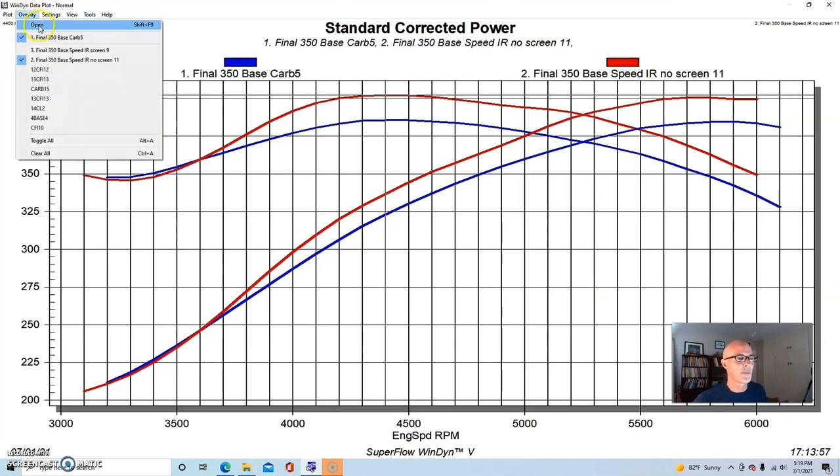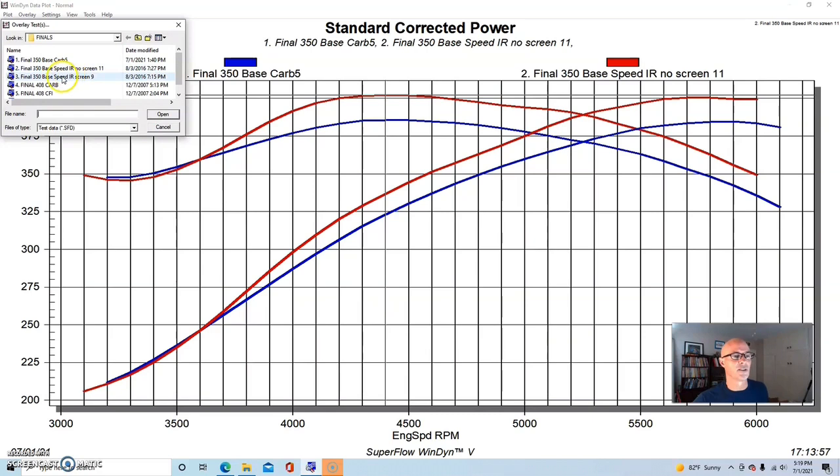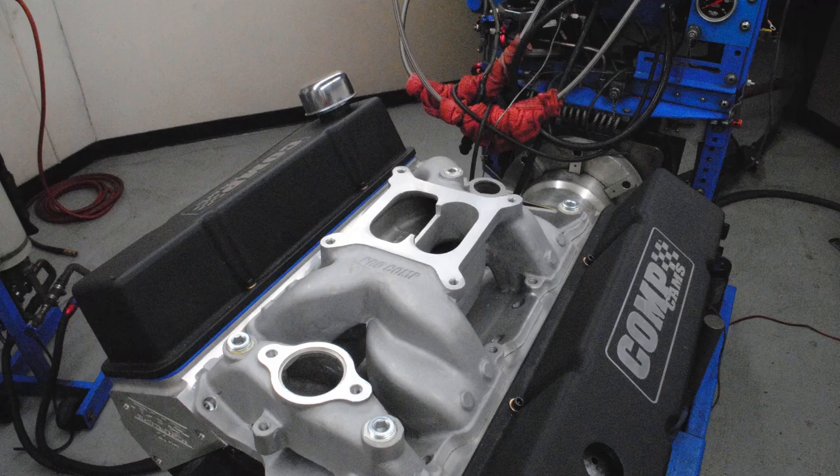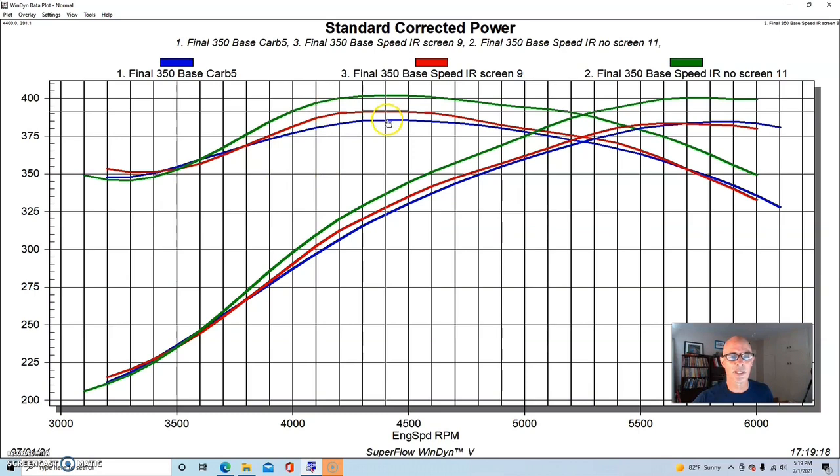As you can see in red, equipped with the screens to basically reduce airflow but also to keep big things out of there from entering and damaging your motor, equipped with the screens the stack injection actually made very comparable power to the standard four barrel. It was up a little bit. Peak torque was up by about six foot pounds. Peak power was almost exactly the same, in fact it was down by one horsepower or so.